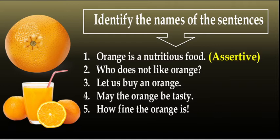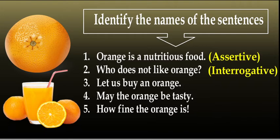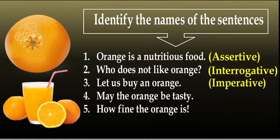Number two: Who does not like orange? This is an interrogative sentence. Number three: Let us buy an orange. If you look at this sentence, it starts with 'let' — that is called an imperative sentence. You will also see imperative sentences starting with a verb: Open the door. Close the door. Open your book. Bring a glass of water. These are also imperative sentences.